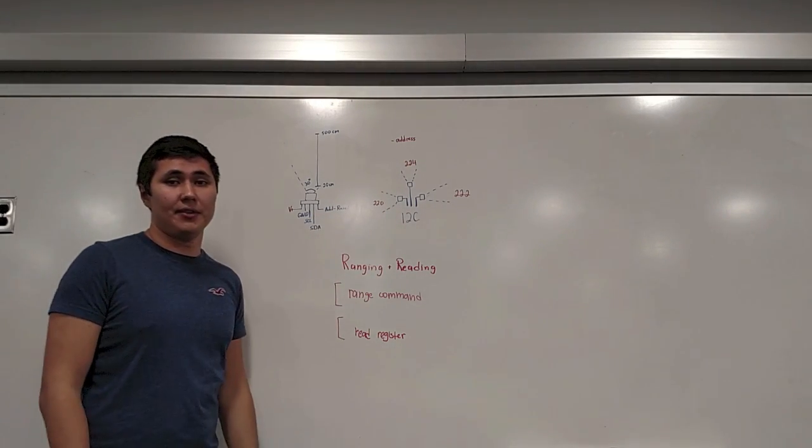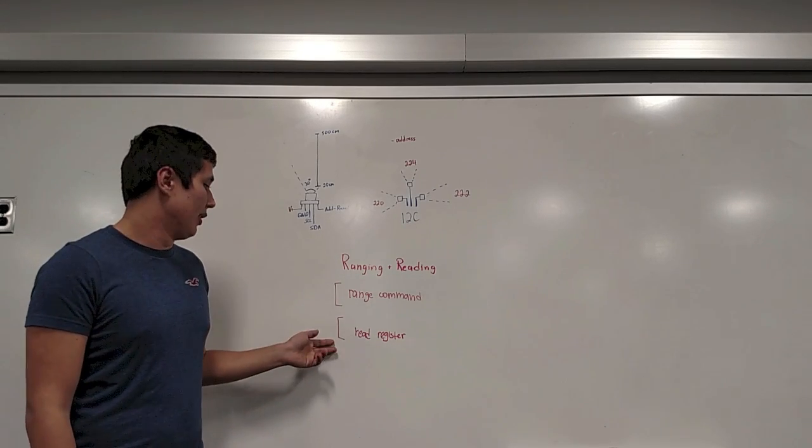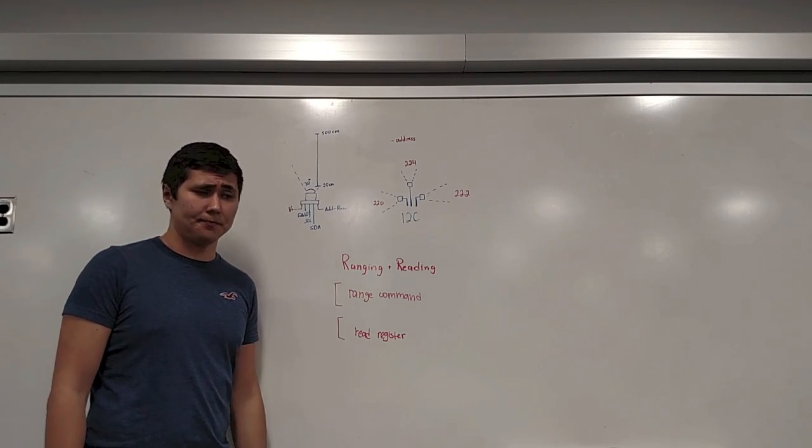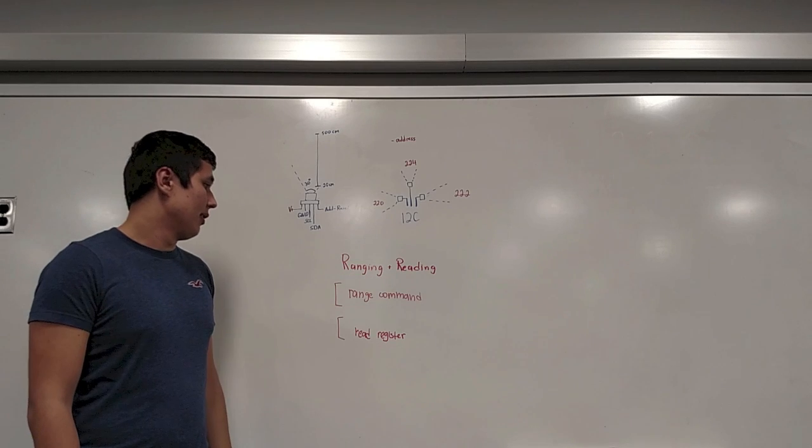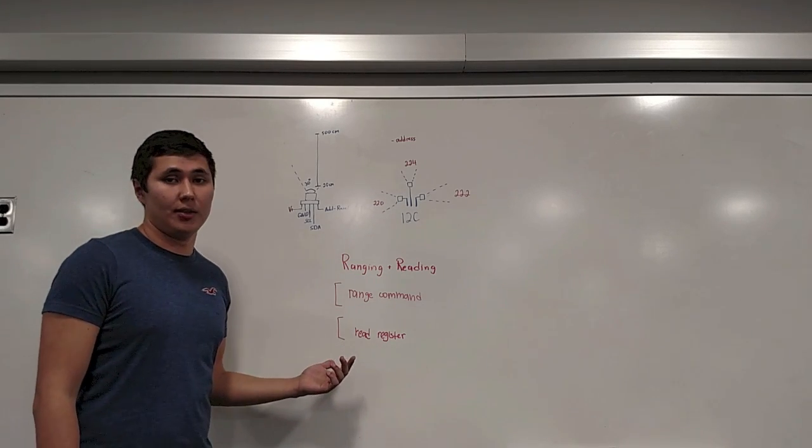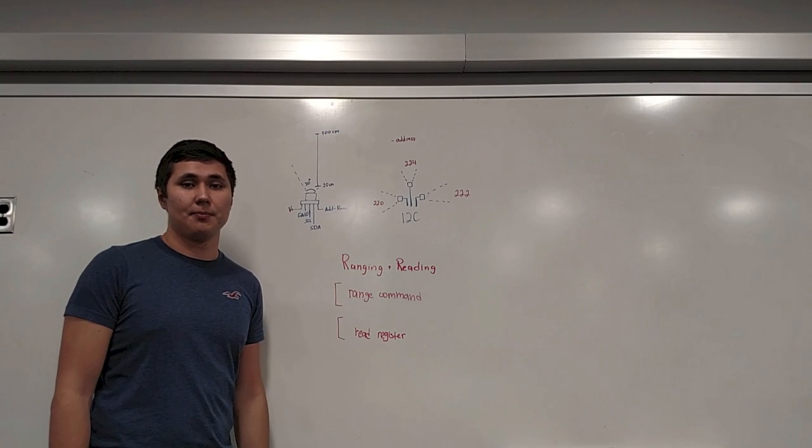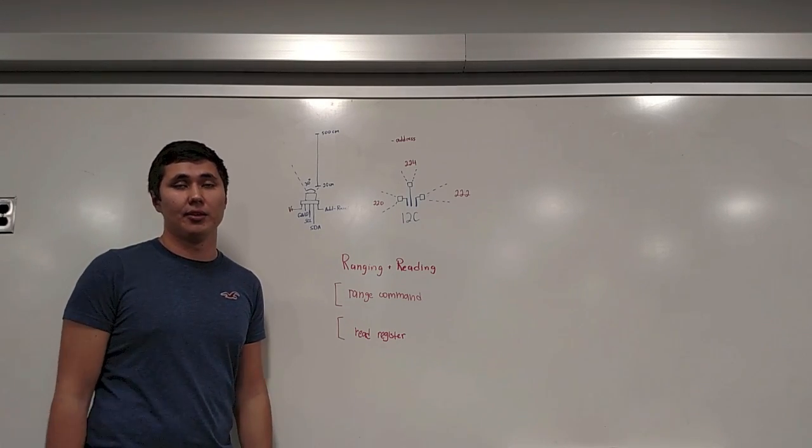The whole process is divided into cycles or parts. The first part is ranging, and the second part is reading. The first part is where we send the range command to the sensors and let them know that they have to start ranging distance. The second part is we're accessing the read register in the sensors and reading distance from it. The reason why we're dividing this process into two parts is because we want to eliminate any ultrasonic interference.